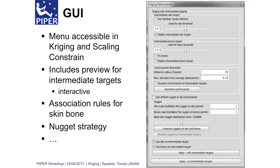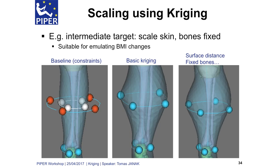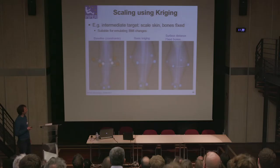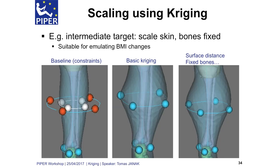Here's just a glimpse of the tool. I was planning to show a demo but we are running a little behind schedule so we will skip it. In the UI you have the option to show the preview of the skin target, show the preview of the bone target, do the decimation and show which control points remain after decimation, and play with the nugget. There is also a parameter for association with bone or association with skin, so you can say if control points should modify the skin target, the bone target, or both.